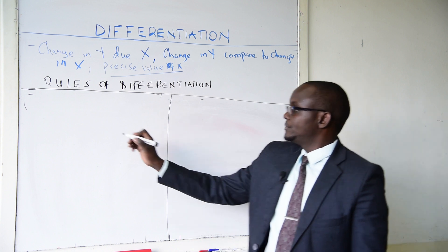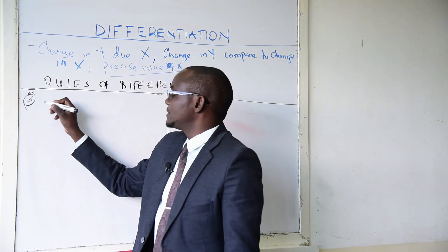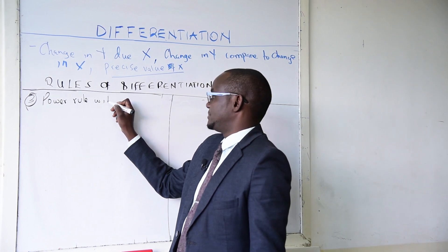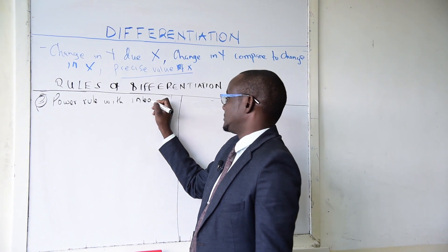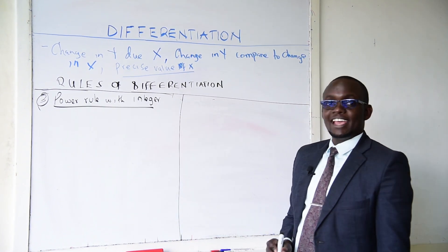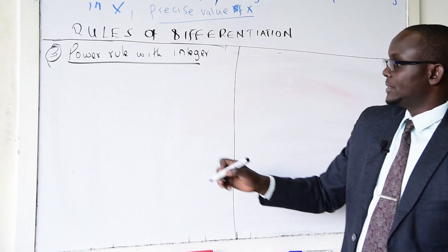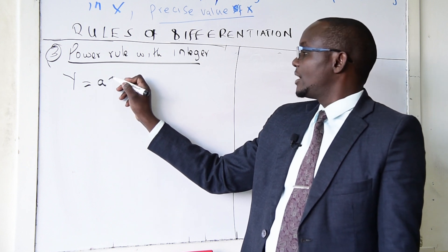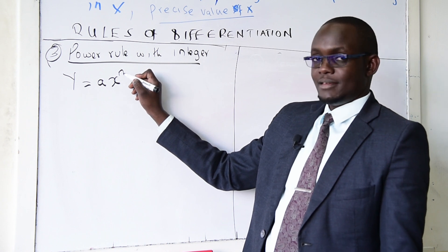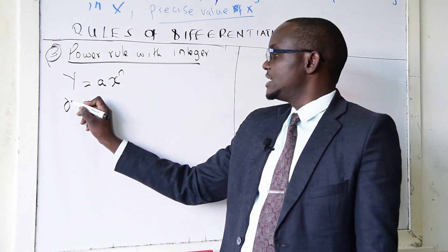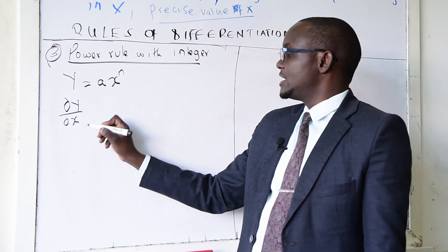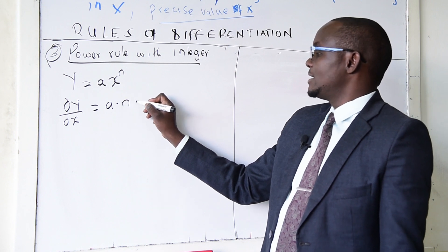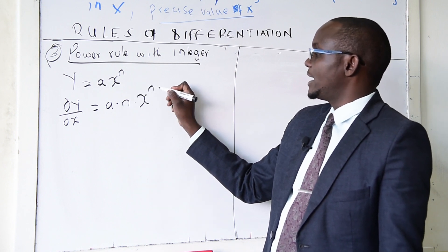The third rule is still the power rule, but this time with an integer — power rule with integer. We are differentiating where x is raised to a certain power but has a coefficient. If y equals a·x^n, where a is our integer, then dy/dx is given by multiplying the integer by n, then by x, with the new power being n minus 1.